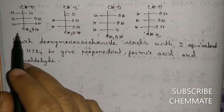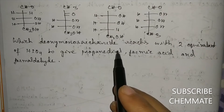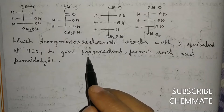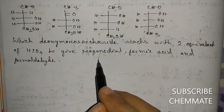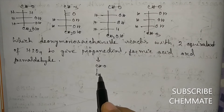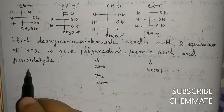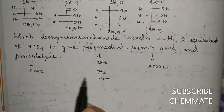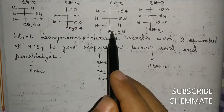Here is an interesting question: which deoxy monosaccharide reacts with two equivalents of HIO4 to give propanediol, formic acid, and formaldehyde? Propanediol is CHO-CH2-CHO, formic acid is HCOOH, and formaldehyde is HCHO. Counting the carbons: one, two, three, four, five — five total carbons, so all the monosaccharides involved have five carbons.